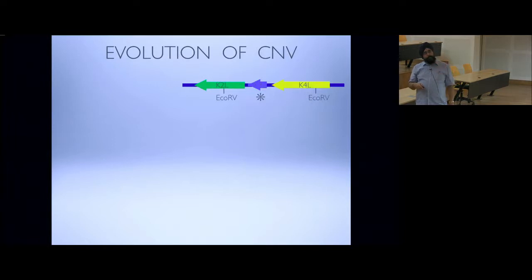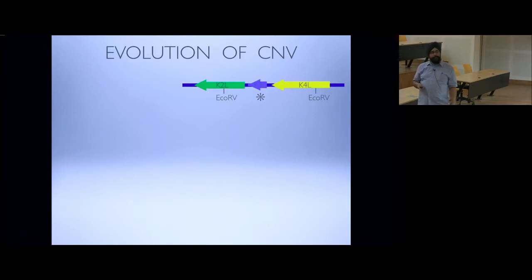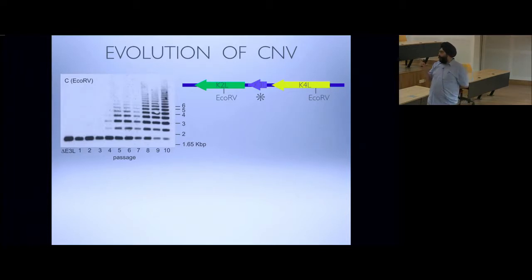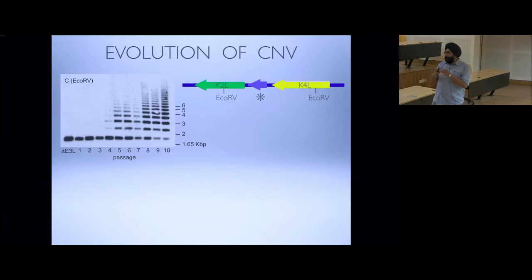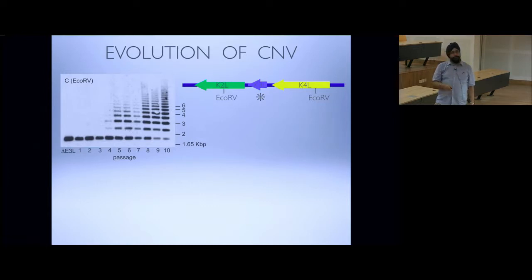Let's look at this more closely. Here we have the K3L gene, flanked by genes called K2L and K4L. Using a radioactive probe against this gene to ask what's actually happening in these replicates, we see something quite interesting. Starting with a delta E3L virus, it's basically a copy number of one. But as you go to passage 4, you start to see the first inkling of some sort of duplication — a staggered ladder because you're not cutting equally: a one-mer, a two-mer, et cetera.